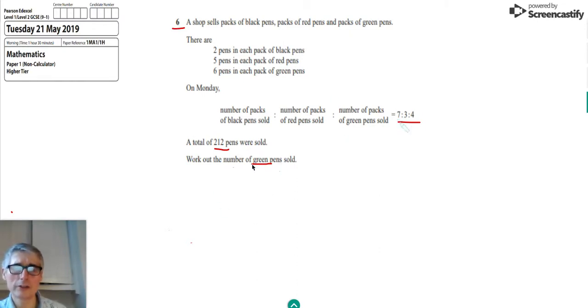So although we're given this ratio, which is the ratio of the packs of each that are sold, we've actually got a differing number of pens in each. So we could set up another ratio which would be the ratio of the black pens sold to the ratio of the red pens sold to the ratio of the green pens sold. Now if we've got seven black packs of pens, but in each pack there are two black pens, that means we've got 14 if we multiply the seven by the two.